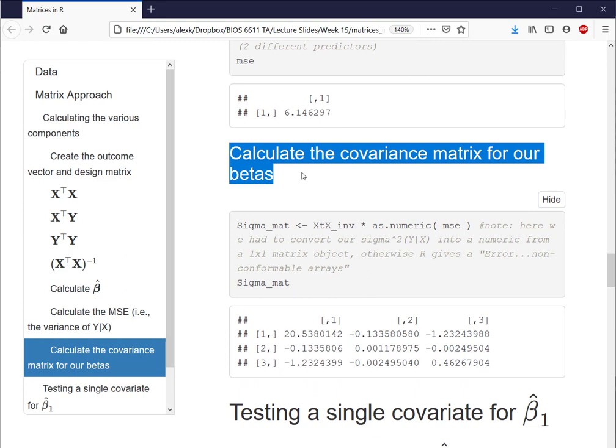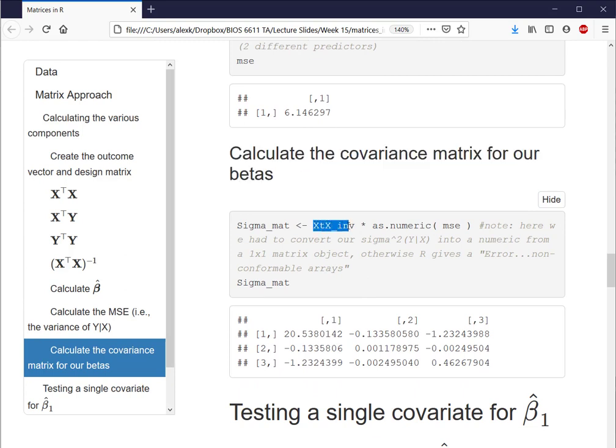With that mean square error, then, moving right along, we can calculate the variance covariance matrix for our beta coefficients. And here we see that that's simply our X transpose X inverse times that MSE value. Here we're specifically telling R to treat it as a numeric object, otherwise it will give an error back to us that we have a 3 by 3 matrix that we would be trying to multiply, because it's only this asterisk, element-wise, by a 1 by 1 matrix. So to prevent that error from occurring, we'll just treat it as a scalar, so that this actual multiplication function will work. And by doing this, though, we arrive at our variance covariance matrix that we can use for inference.